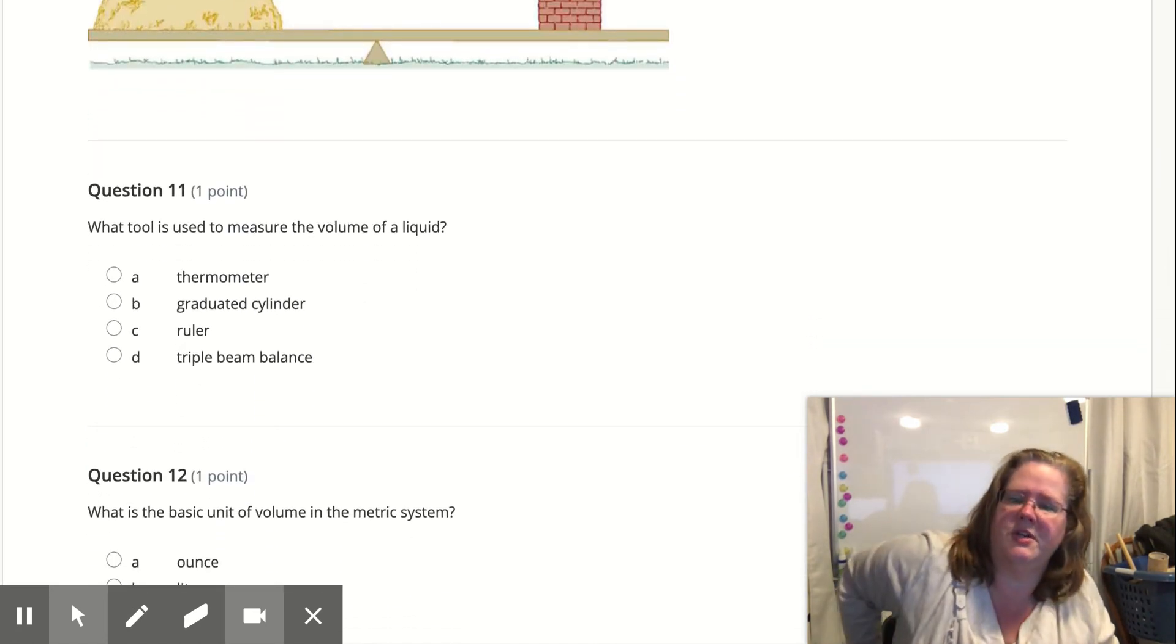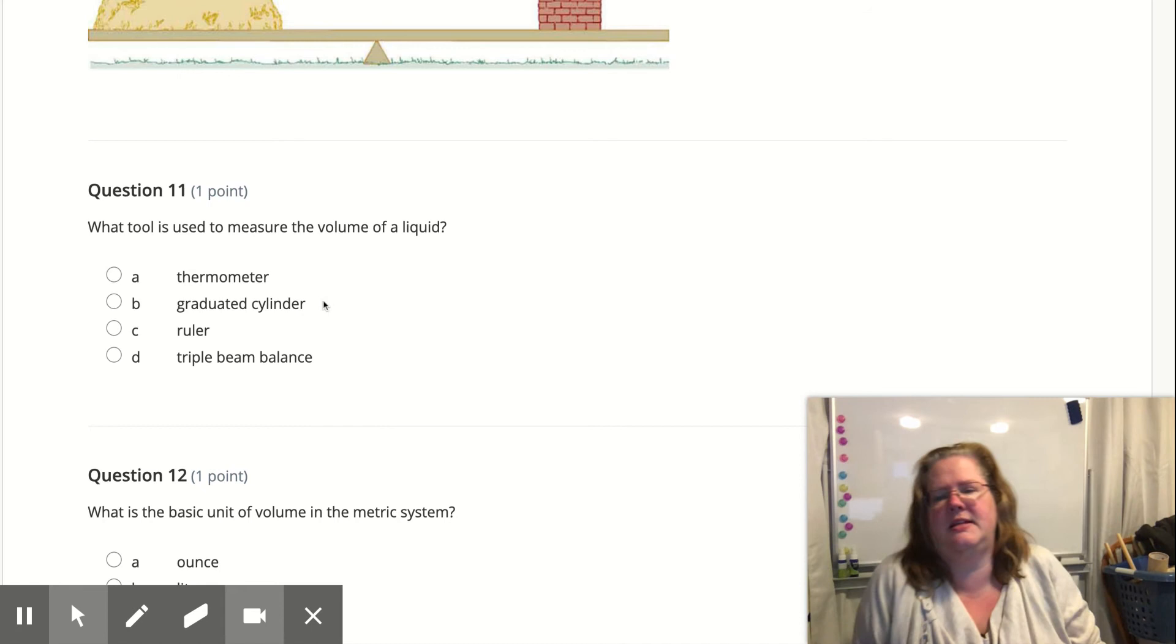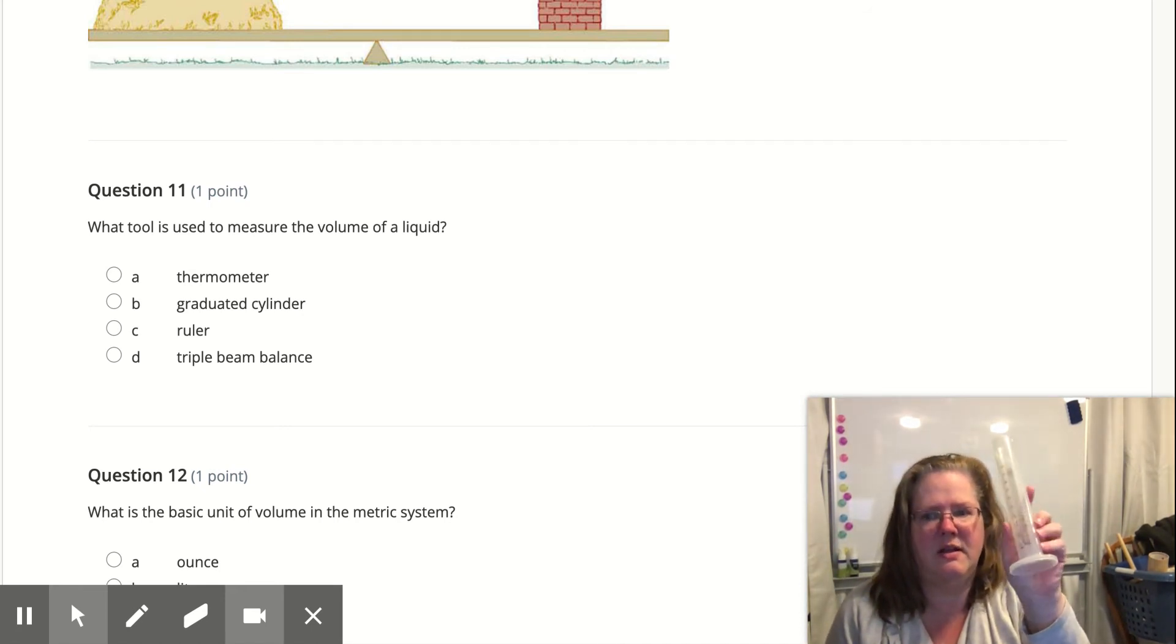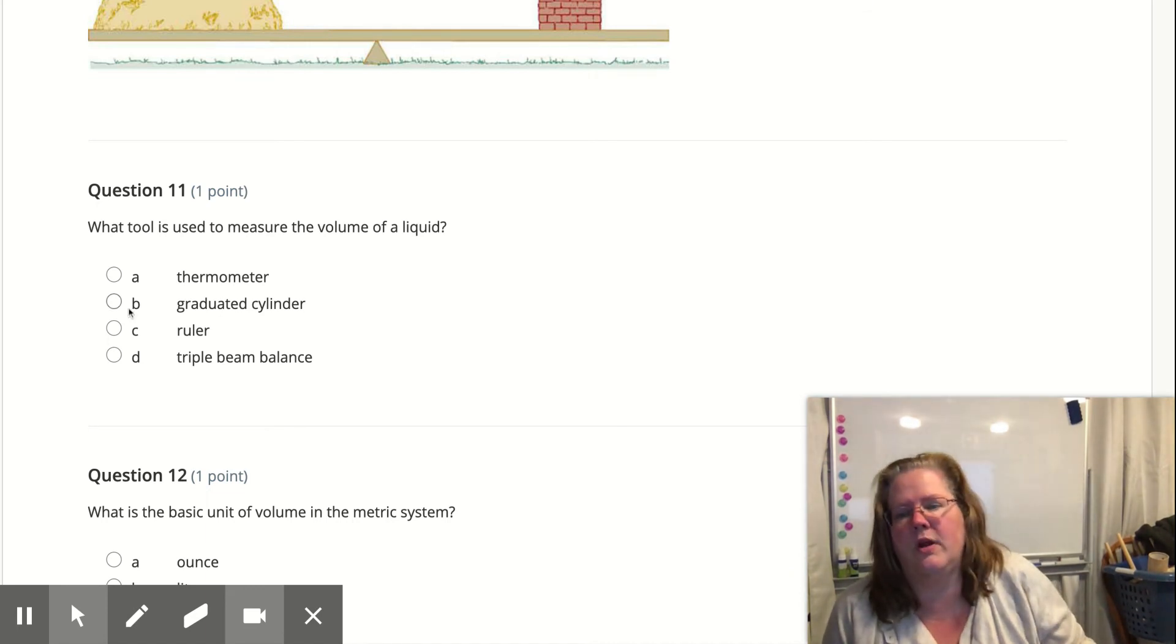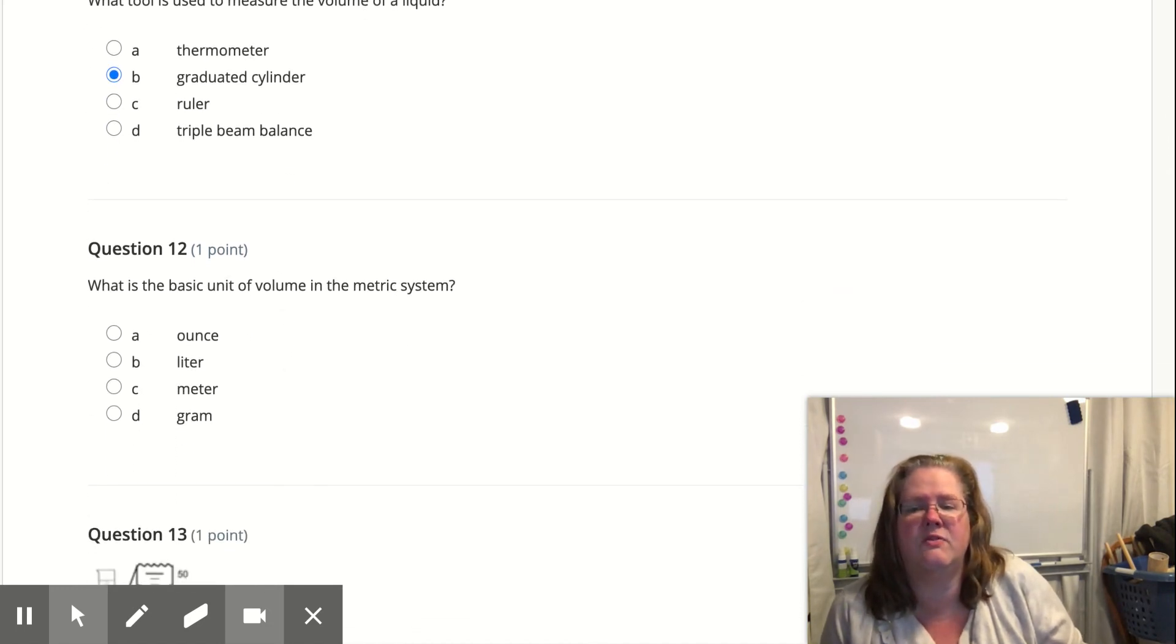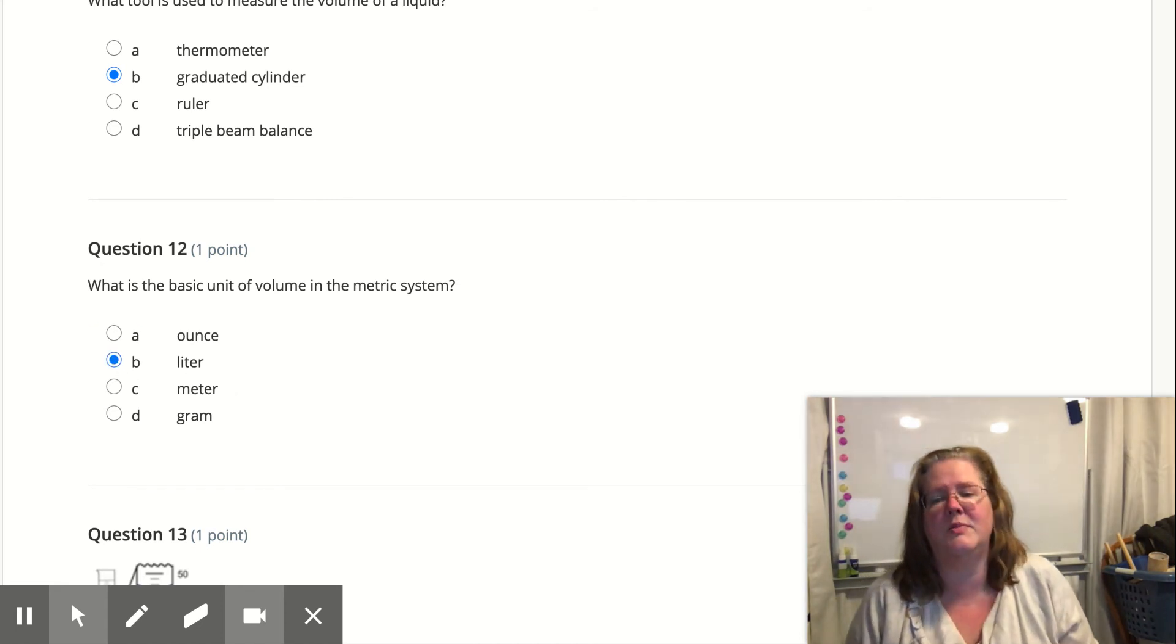So what tool do we use to measure volume? Well, it's not a thermometer because that's temperature. But remember I said this thing, that graduated cylinder, this can find volume of liquid. So we're going to go with that because ruler does distance, triple beam does mass. What is the basic unit of volume in the metric system? Not ounces because that is U.S. standard. Grams are weight, meter is length, liter is volume. So our basic unit for volume is a liter.